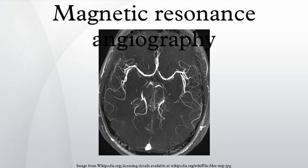Visualization: occasionally, MRA directly produces slices that contain the entire vessel of interest. More commonly, however, the acquisition results in a stack of slices representing a 3D volume in the body. To display this 3D dataset on a 2D device such as a computer monitor, some rendering method has to be used. The most common method is maximum intensity projection, where the computer simulates rays through the volume and selects the highest value for display on the screen. The resulting images resemble conventional catheter angiography images.